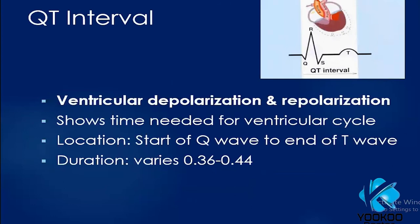The QT interval corresponds to both ventricular depolarization and repolarization, showing the time needed for the whole ventricular cycle. It is measured from the start of the Q wave to the end of the T wave. Duration usually varies based on heart rate, but most often it is 0.36 to 0.44 seconds — that is 360 to 440 milliseconds. There is a nomogram that shows the corrected QT based on heart rate.